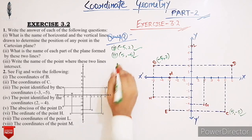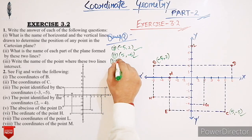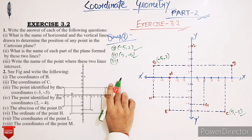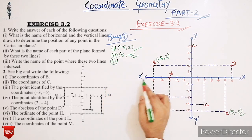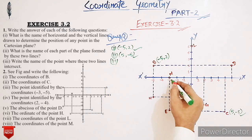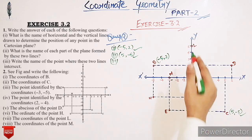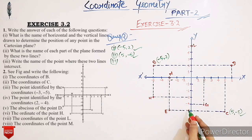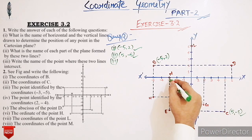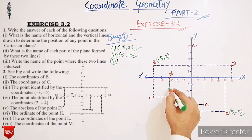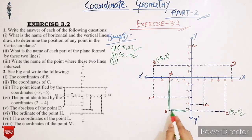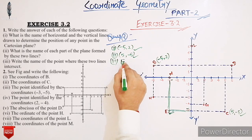Now next, we have to find the point identified by the coordinates (-3, -5). Let's see: -3 on the x-axis is here, and -5 on the y-axis is here. So the point identified by the coordinates (-3, -5) is point E.